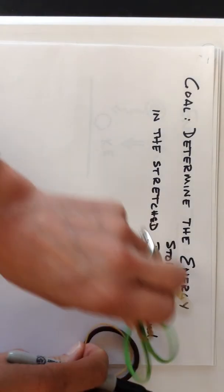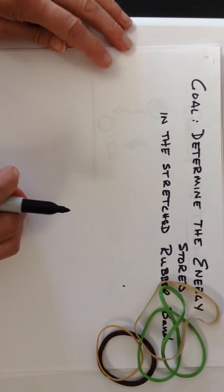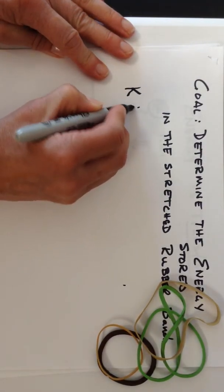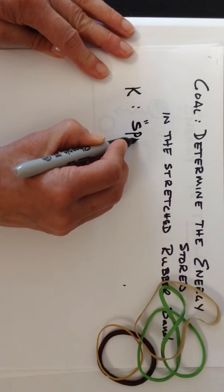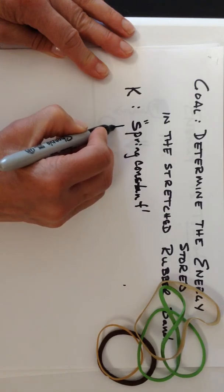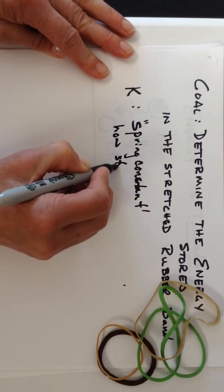So we call this, in physics, we don't call it the stretchiness, we give it a more fancy name. It's called K, and this is called the spring constant. But all it is, is a characteristic of how stretchy is the rubber band.